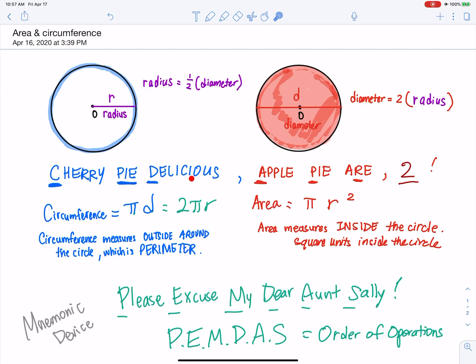Cherry Pie Delicious Apple Pie R2. Circumference equals pi times diameter or 2 pi r, and area equals pi r squared. Hopefully this mnemonic device is sufficient for you to remember the circumference or perimeter and the area of a circle.